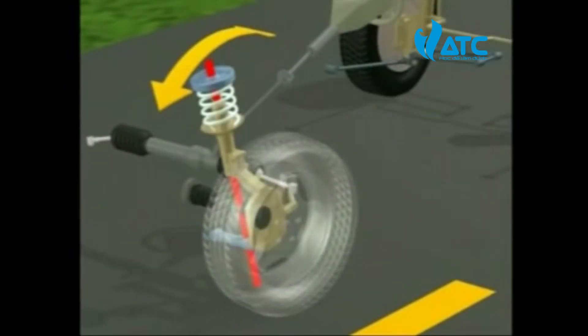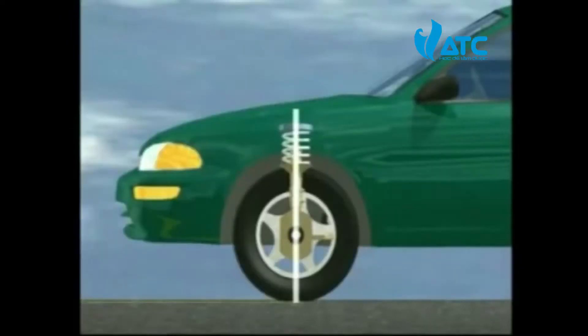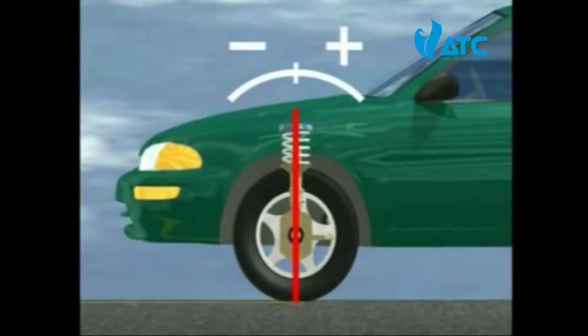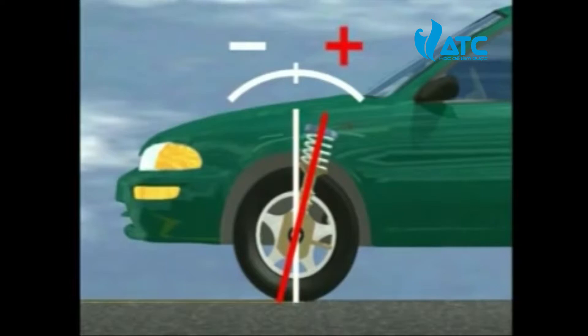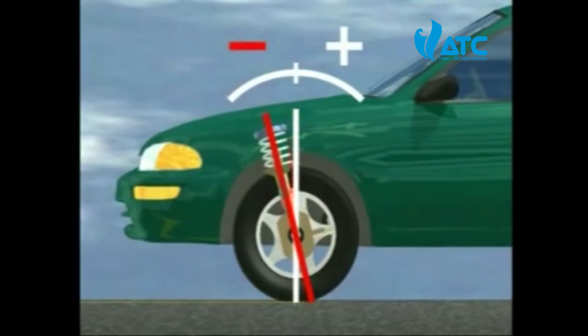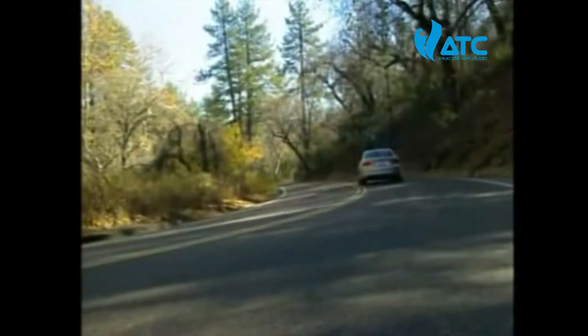Caster is a line drawn through the steering axis and then compared to vertical. If the axis is tilted back at the top, the angle is positive. Tilted forward is negative. Caster improves stability, steering wheel return, and cornering.